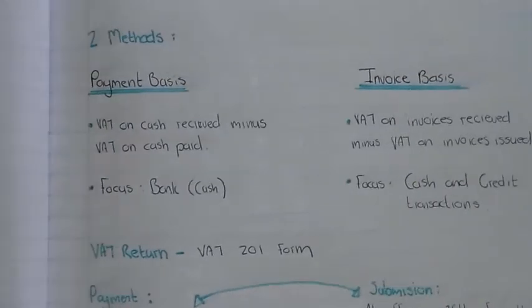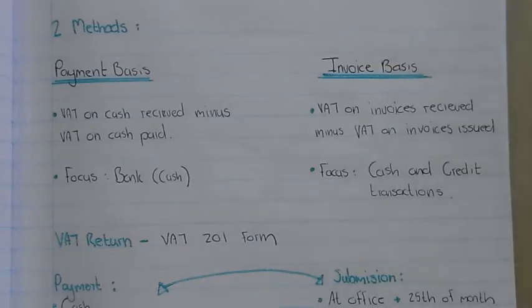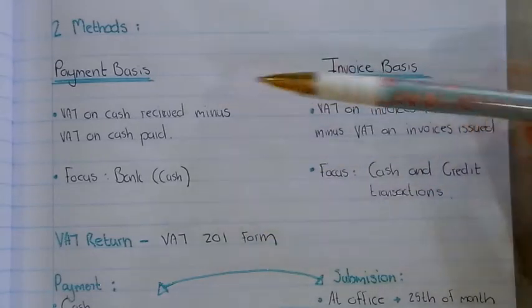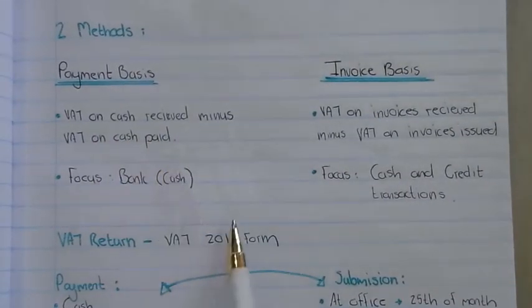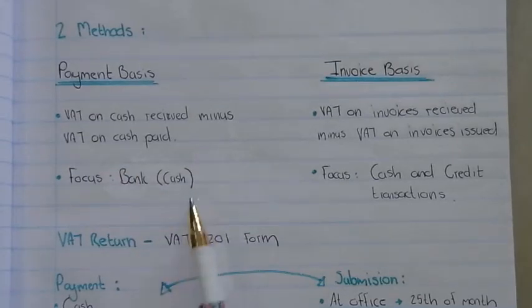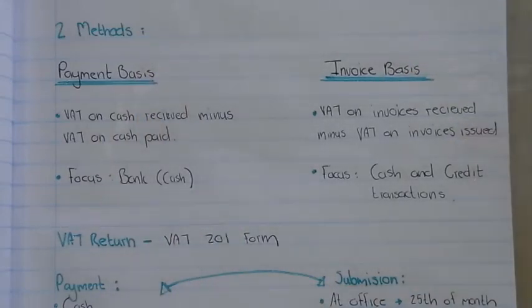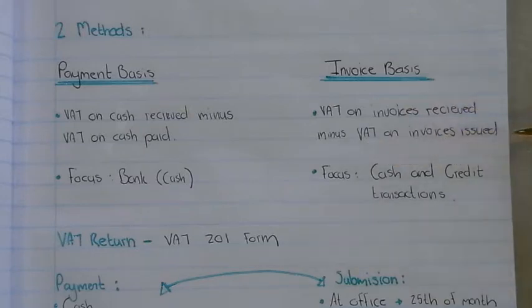There are two methods of calculating VAT. The one is called the payment basis and the other is the invoice basis. On the payment basis we look at money received and money paid — that is VAT on cash received minus VAT on cash paid, focusing on bank and cash. The invoice basis means VAT is charged when invoices are received and on invoices issued — invoices received minus invoices issued — and here we focus on cash and credit transactions.